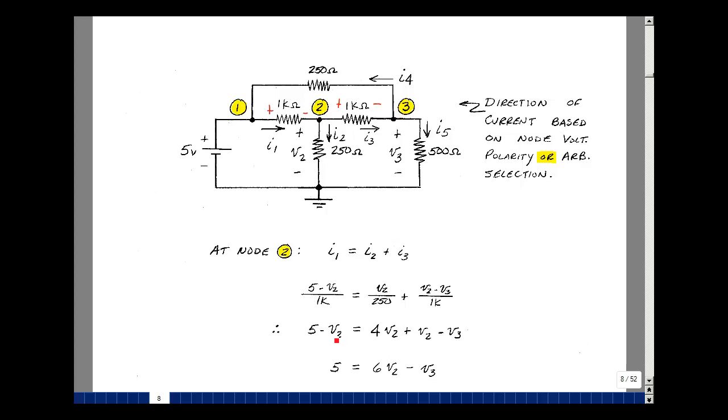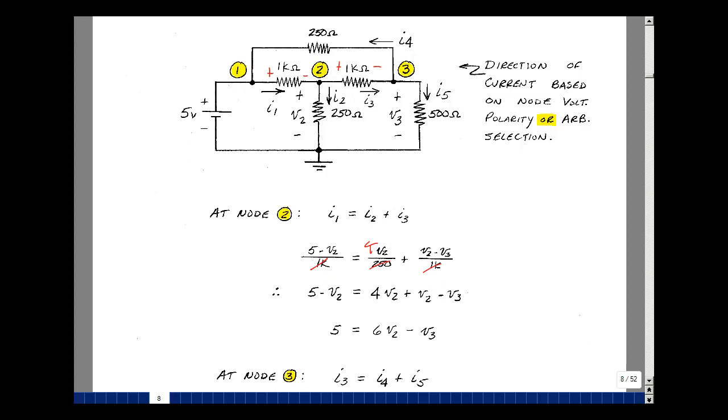Let's multiply both sides of the equation by 1,000. This becomes then 4. This just becomes 1 times that. 5 minus V2, 4 times V2, and then V2 minus V3. Decide the equation, I'll leave the 5. I'll bring the V2 on this side. I get another added one and another one, so I get 6V2 and then minus V3. Two unknowns are V2 and V3. I have one equation and two unknowns. I need one more equation. Let's do that at node 3.